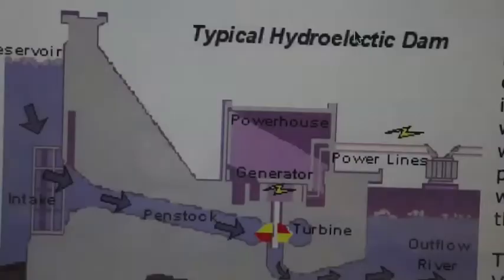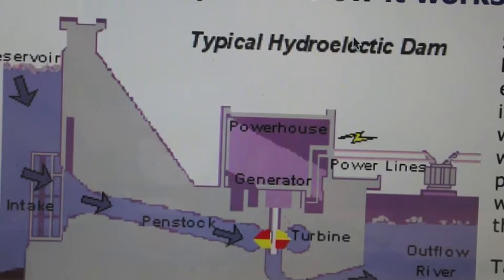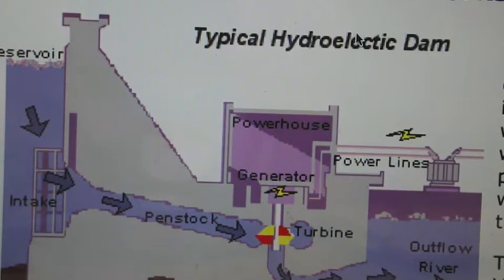So how do we get electricity from water? Hydroelectric and coal-fired power plants are kind of the same actually. Both of them use a power source to turn a turbine, which turns a metal shaft in the electric generator. A coal-fired power plant uses steam to move the turbine, but a hydroelectric plant uses falling water.